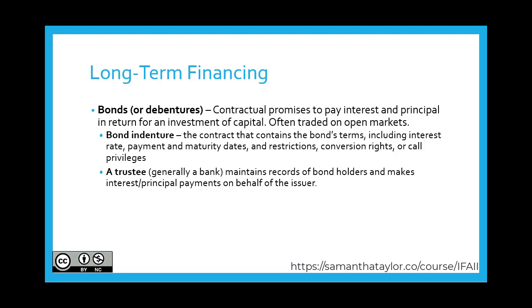Bonds or debentures are contractual promises to pay interest and principal in return for an investment of capital. These are often traded on open markets. The bond indenture — the contract that contains the bond's terms — includes interest rate, payment and maturity dates, restrictions, conversion rights, or call privileges, which we'll cover more in a subsequent chapter.